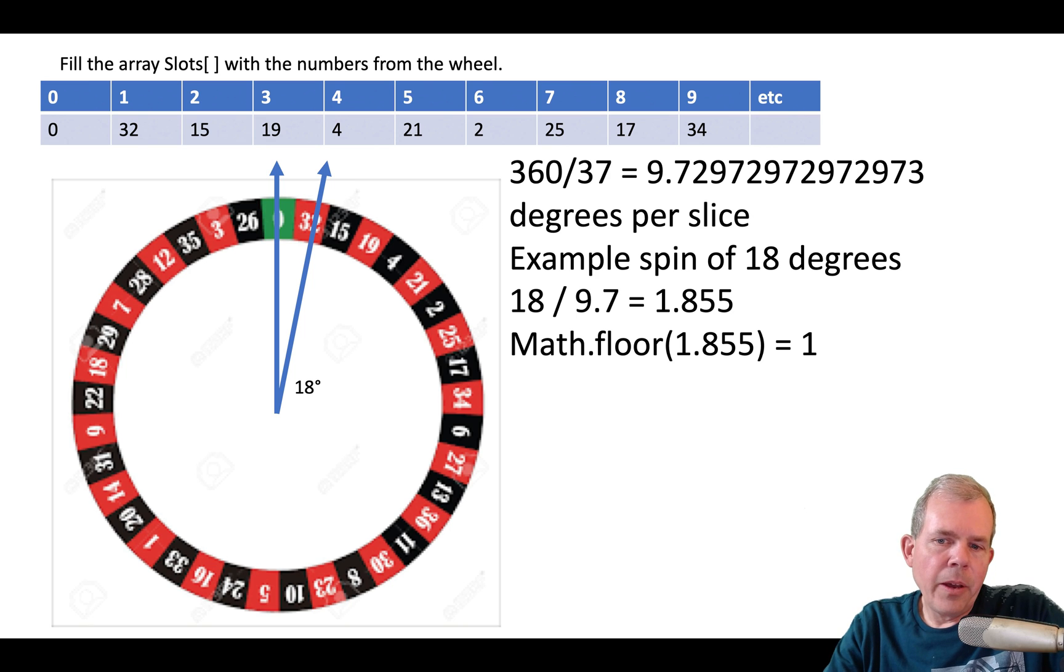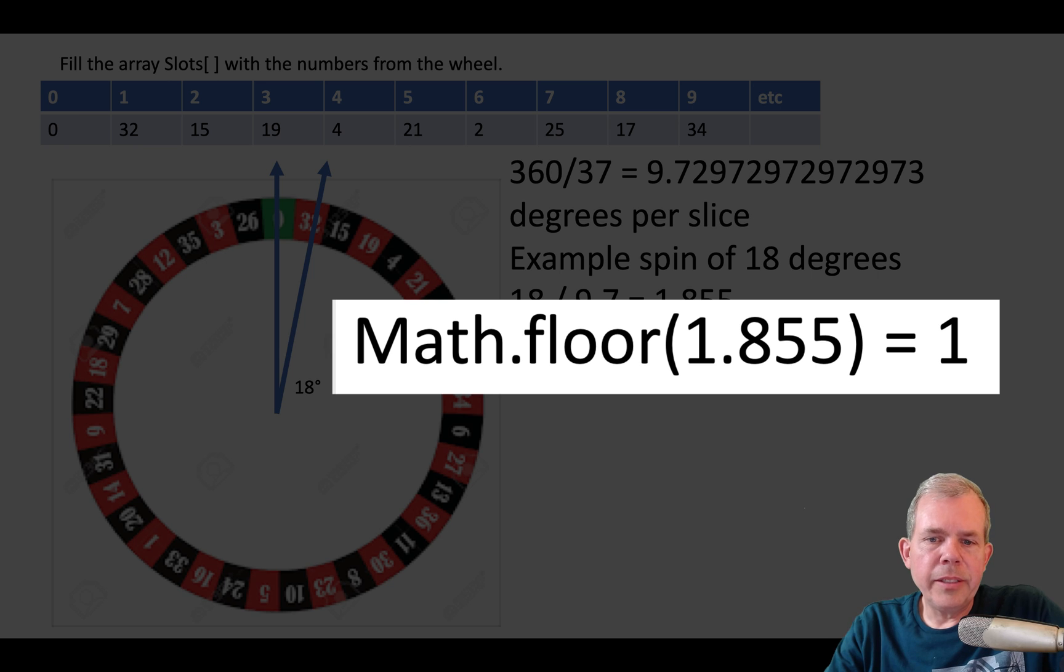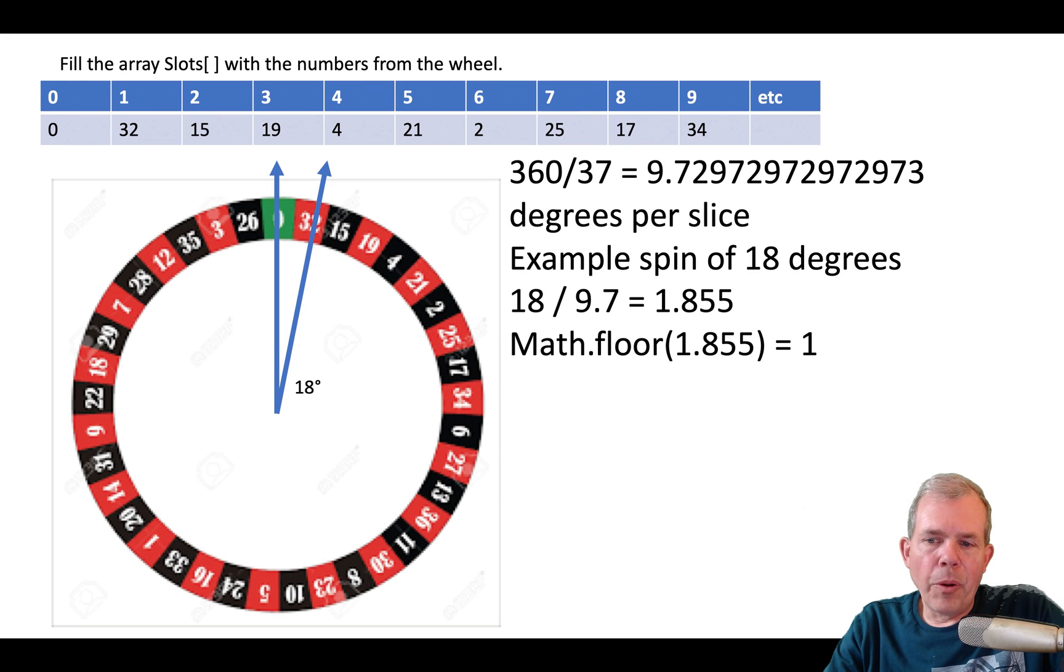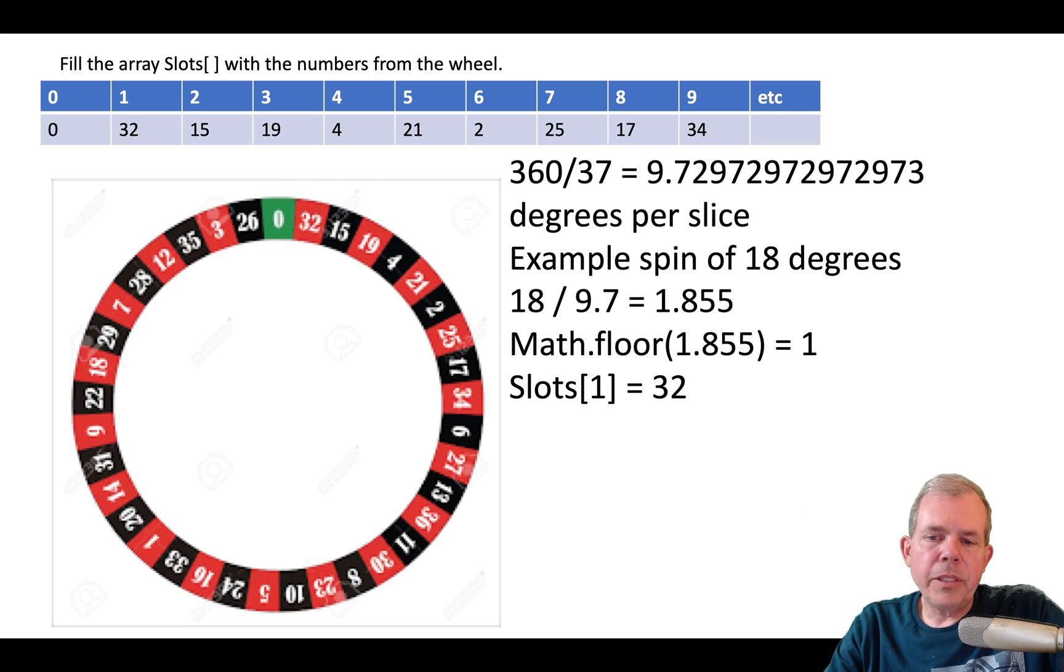What good does that do? Well, if we know that item 1 was chosen because it was a floor of 1.8, we could look up the array saying, tell me the slots at array position 1. What's in there? Well, we've defined it as 32. So you could say, we know that the 32 red was chosen.